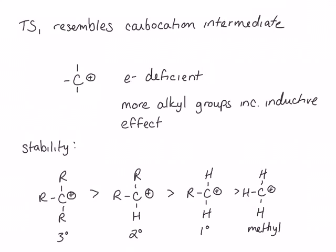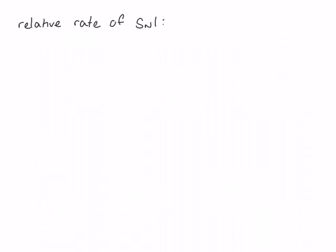Accordingly, the rate of an SN1 reaction is dependent on the substitution of the electrophilic carbon, but in the reverse order compared to SN2. A tertiary substrate will react most quickly, more quickly than a secondary substrate. Primary carbocations are very unstable, so primary substrates react much, much slower, and methyl substrates basically do not react through the SN1 mechanism.